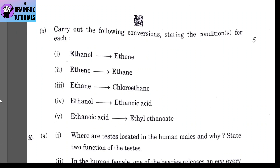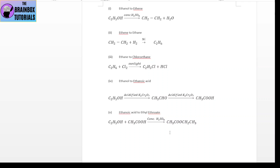Part B: carry out the following conversions stating conditions for each. (1) Ethanol to ethene: condition — concentrated H₂SO₄ as dehydrating agent. (2) Ethene to ethane: condition — nickel as catalyst (hydrogenation). (3) Ethene to chloroethane: condition — sunlight required. (4) Ethanol to ethanoic acid: condition — acidified potassium dichromate or alkaline KMnO₄ as oxidizing agent. (5) Ethanoic acid to ethyl ethanoate: condition — concentrated H₂SO₄ as dehydrating agent.